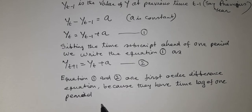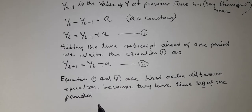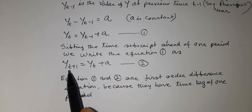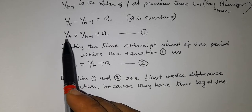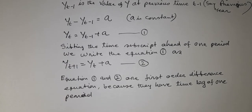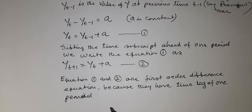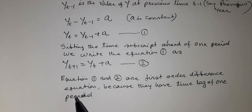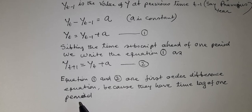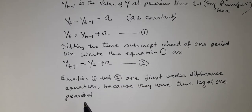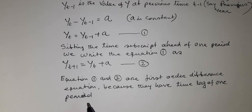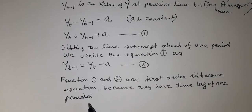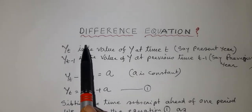Here, the time variable t is discrete, like 1, 2, 3. We consider t as the present year or present period, and t minus 1 as the previous period. The time variable is discrete, not continuous. Since the time variable is discrete and we consider the effect on y of change in discrete time, this is called a difference equation.